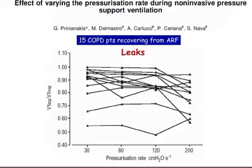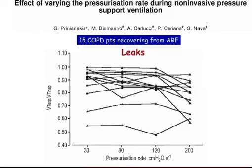Another important indicator of leaks: in a study of COPD patients receiving NIV, the authors looked at the ratio between expired and inspired tidal volume at various pressurization rates. As pressurization rate became extremely rapid, the ratio in many patients tended to decrease because of important leaks, reducing the expired-over-inspired tidal volume ratio. Looking at expired tidal volume is a good indicator of leaks, but you must most often look at the ratio between inspired and expired tidal volume.